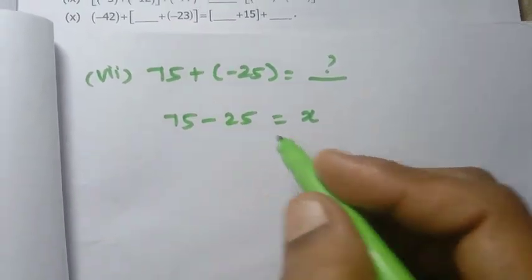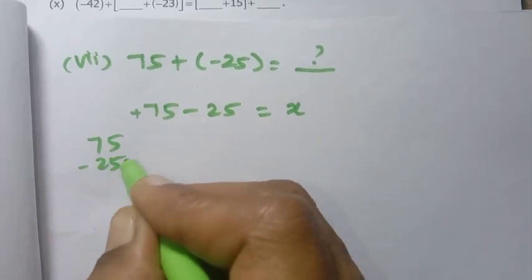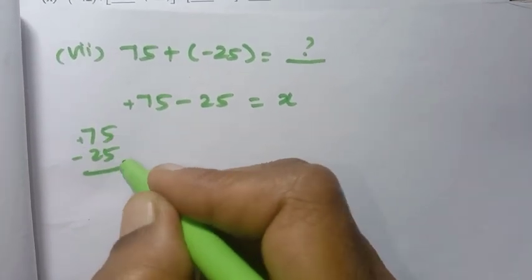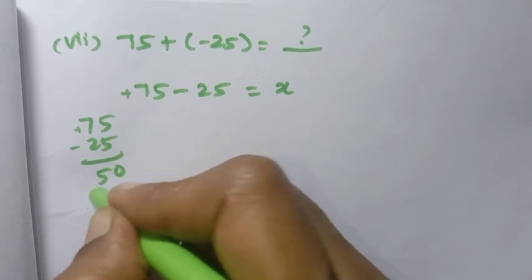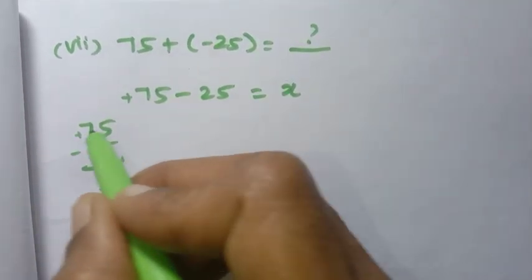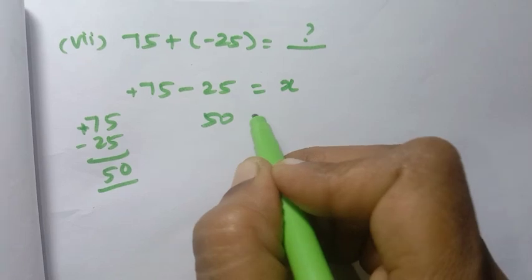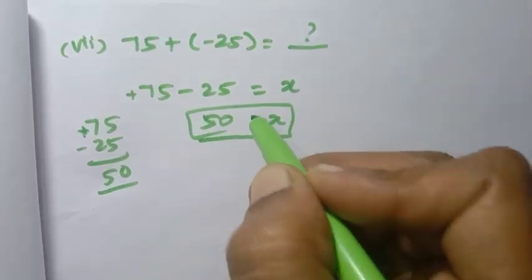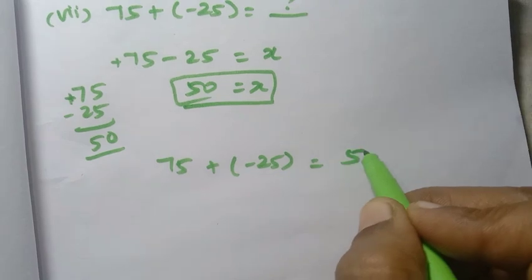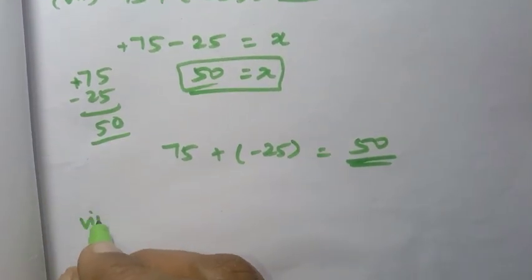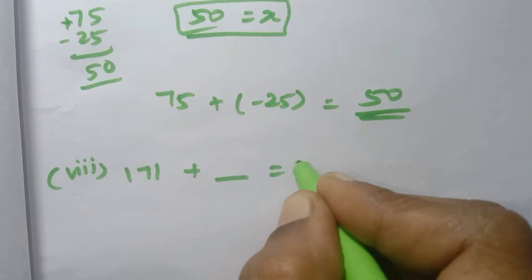The highest number with the plus symbol gives us x equals 50. So 75 minus 25 equals 50. Then the eighth sum: 171 plus dash equals 0.